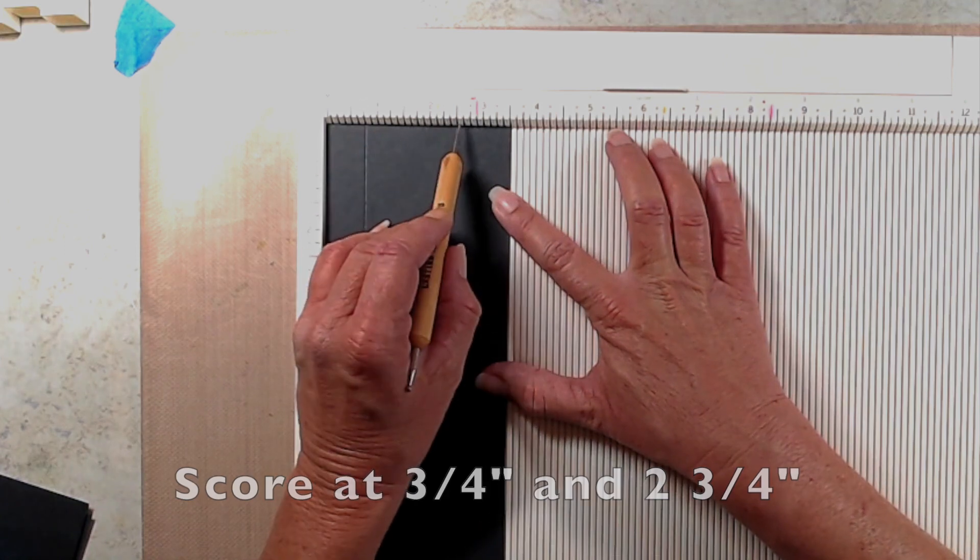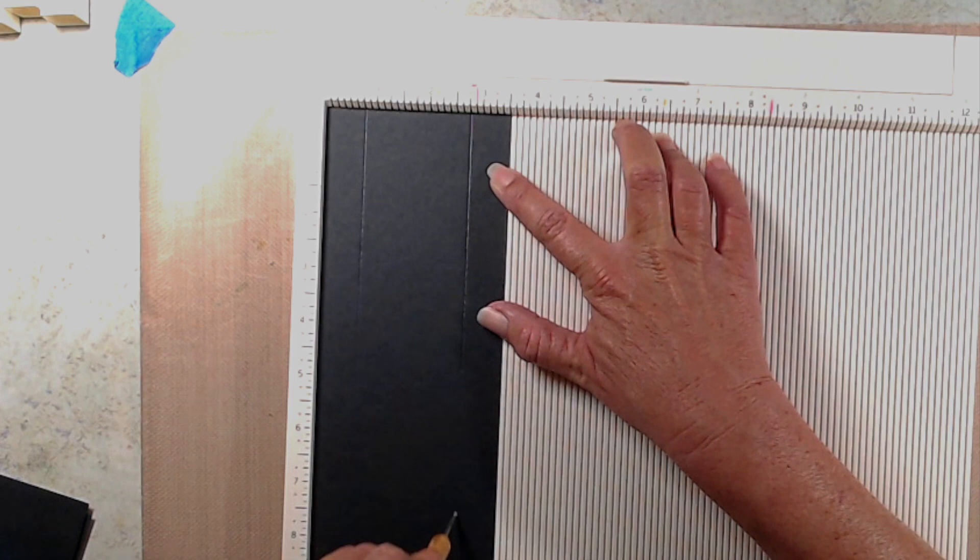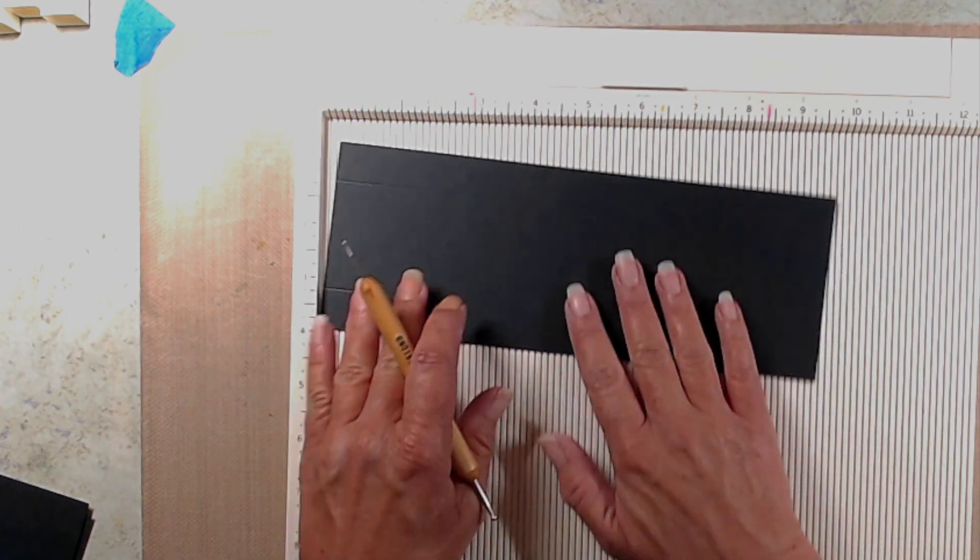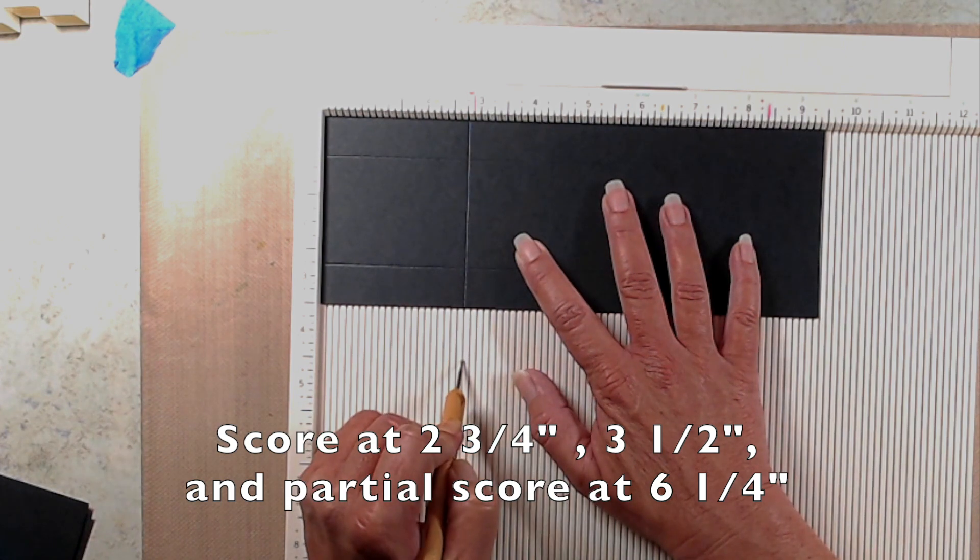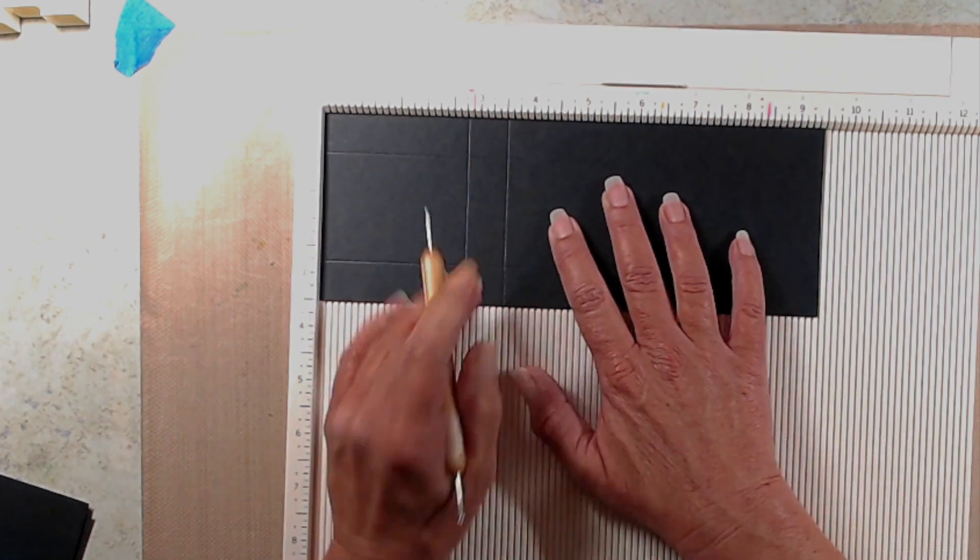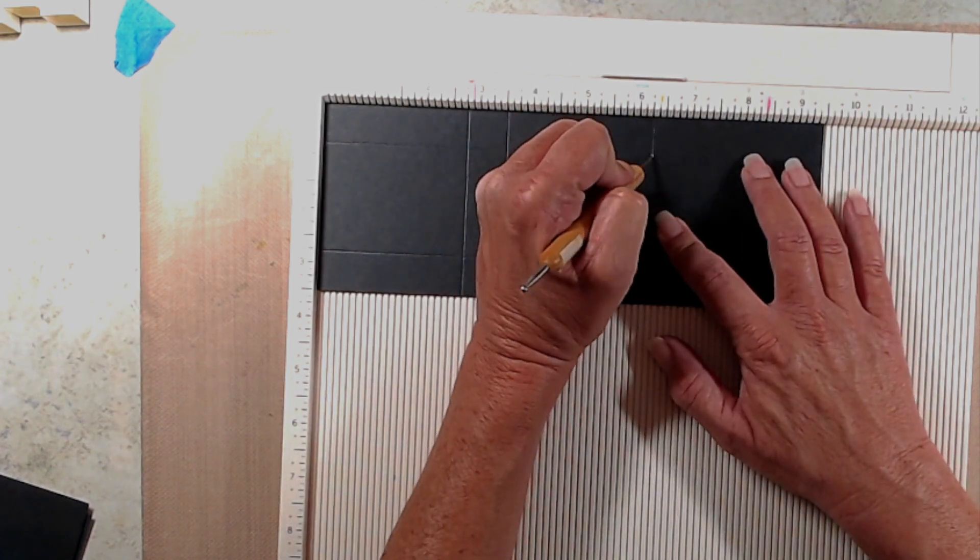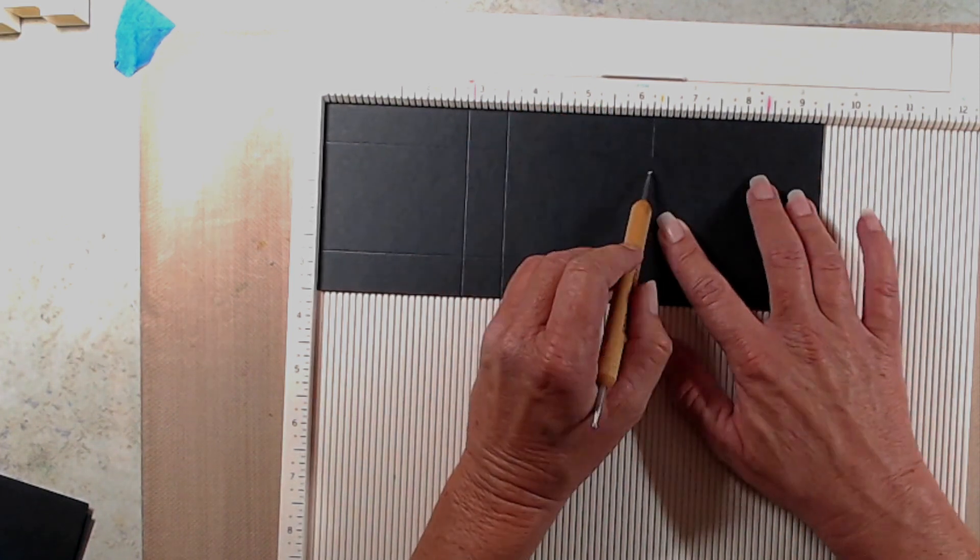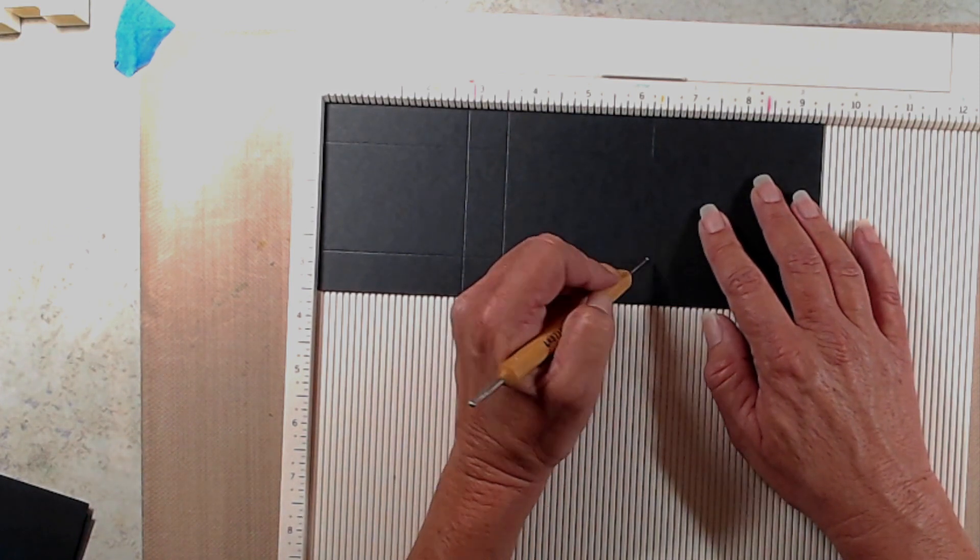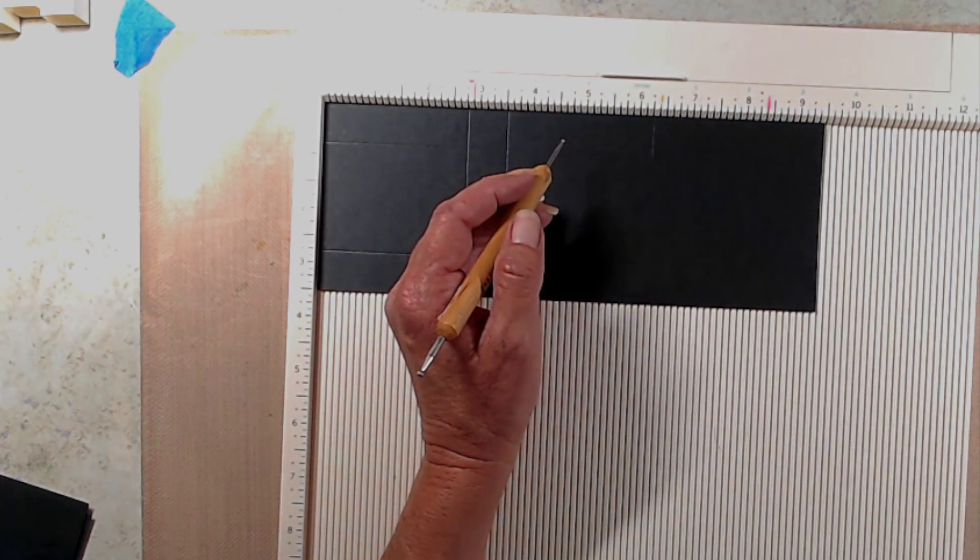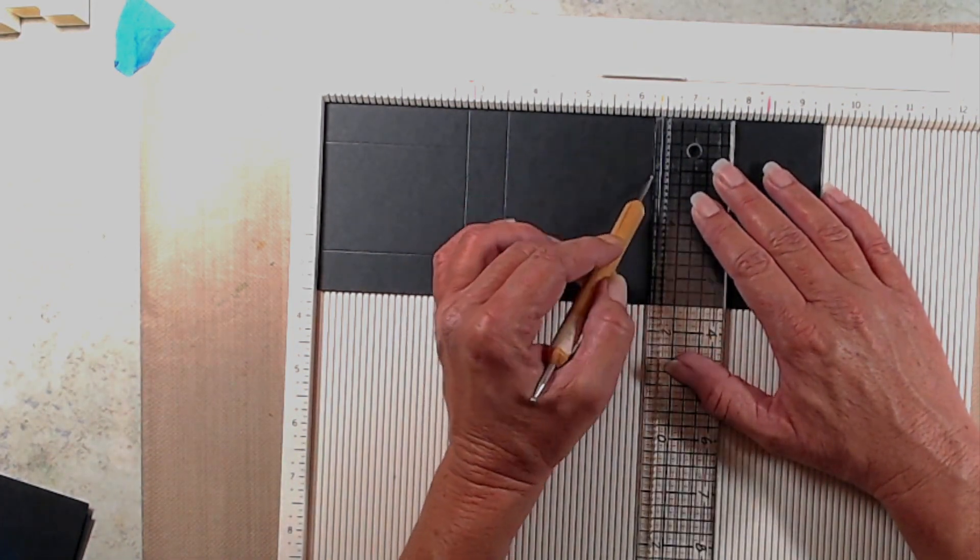Then you'll rotate your cardstock with the nine and a half inch side at the top of your scoreboard. You want to score at two and three quarters of an inch and three and a half inches. And then when you get to the final scoring, you're going to want to score at six and a quarter, but you only want to score down to the very first perpendicular score line. And then you kind of want to follow it down to the bottom and score beneath the second perpendicular score line.